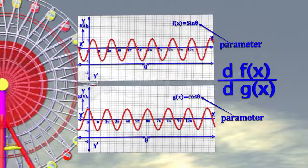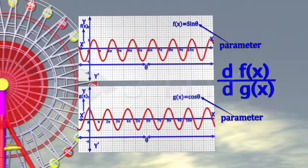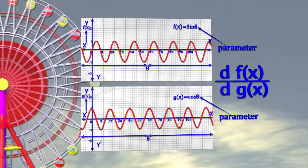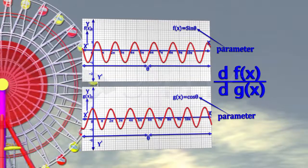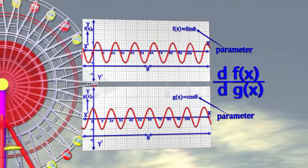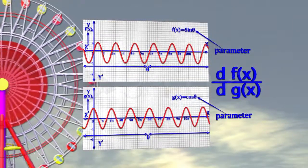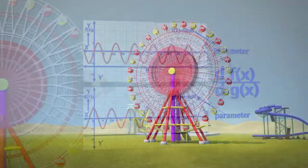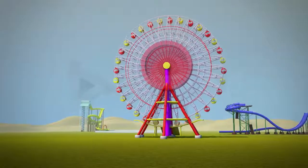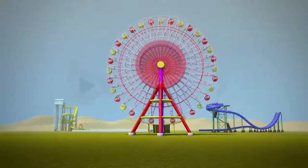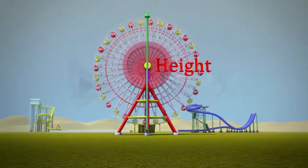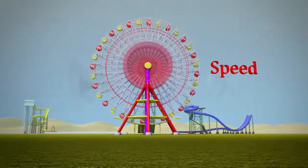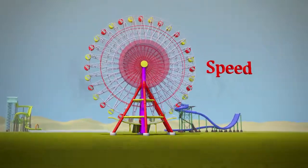Let us see how the values of x and y change depending on t using the illustration of a ferris wheel. Parametric equations allow you to make a graph that represents the position of a point on a ferris wheel. All the details like height of the ferris wheel off the ground, its direction and speed of its spin, can be modeled using parametric equations.